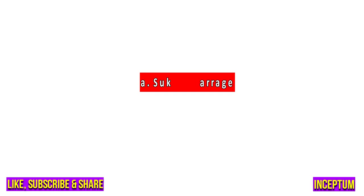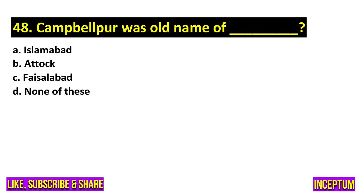Question number 48. Campbell Puras is the old name of? In the options we have Islamabad, Attock, Waslabad, none of the above. And the right answer of this question is option B, Attock.